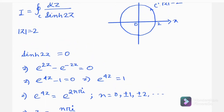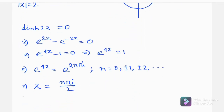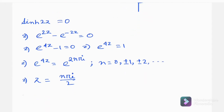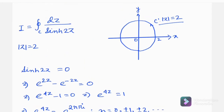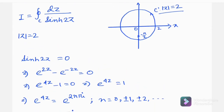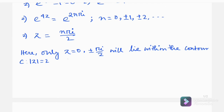Among all these singular points, within the contour |z| = 2, only three points lie inside: z = 0, z = πi/2, and z = −πi/2. On the imaginary axis, these correspond to the values 0, π/2, and −π/2.